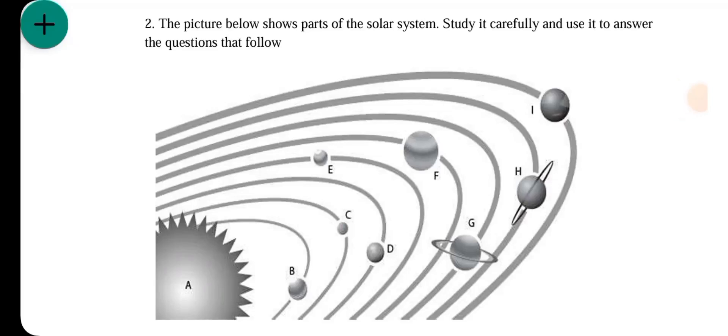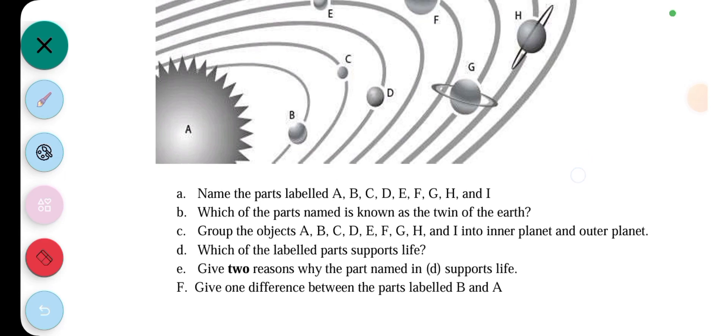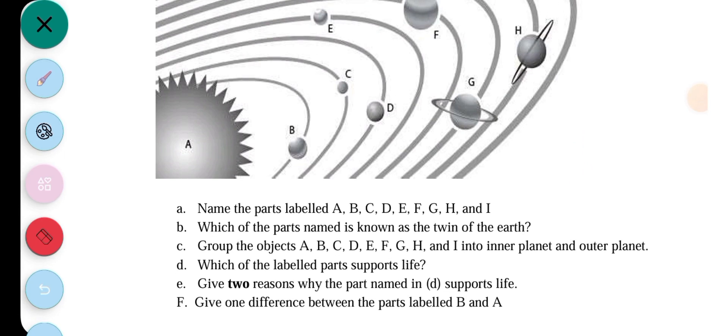The picture below shows parts of the solar system. Study it carefully and use it to answer the questions that follow. So question A, name the parts labelled A to I.